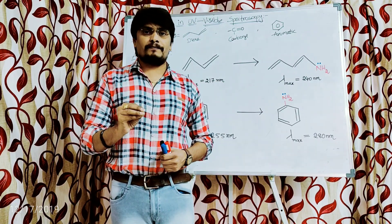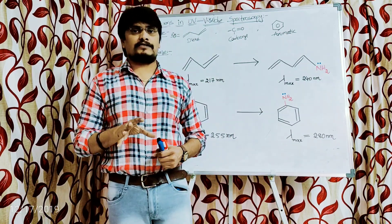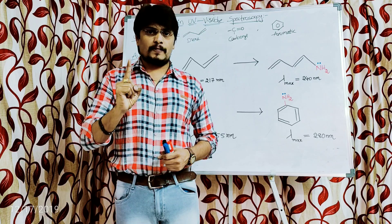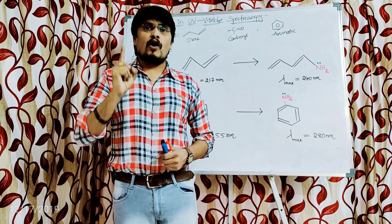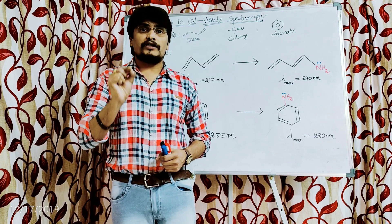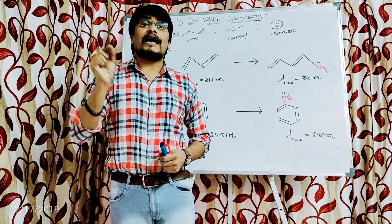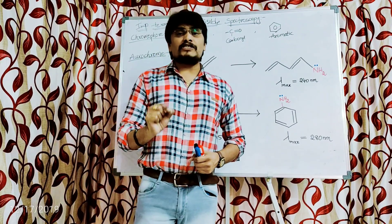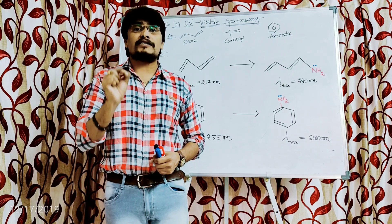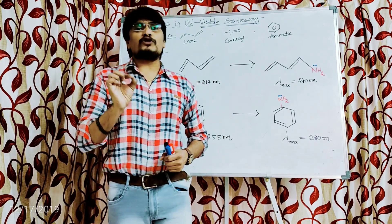Based on this, we can say that the chromophore is a substance which gives or imparts the color to the sample or molecule. There are two definitions for chromophore. The first definition is: the substance, moiety, or portion of the molecule which will absorb the UV-visible light or radiation is called as chromophore. The second definition is: the portion of the molecule which imparts the color to the molecule is called as chromophore.